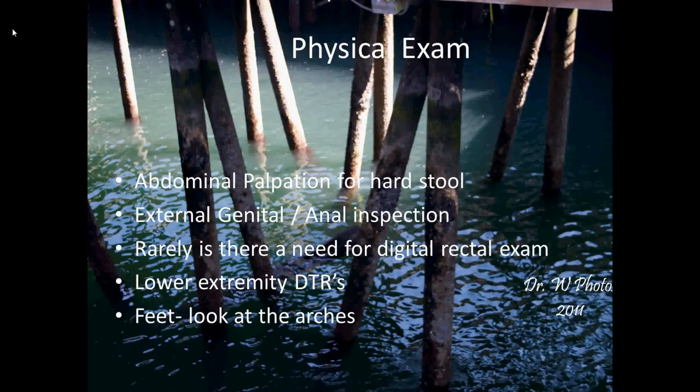Physical exam: it's important to do a thorough exam. Abdominal palpation for hard stool is very important. Look at the external genitalia and the anus — lots of people never take the time to look, and if you never look, you miss all sorts of things. Rarely do you need to do a digital rectal exam, and I would discourage you from doing one unless there's a pressing reason, because these kids already have control issues and taking away that control is just going to make things worse. Look at lower extremity DTRs — this will help you rule out sacrocoxygeal tumors as well as tethered cord. Look at the feet for high arches, which will also help you rule out tethered cord and sacrocoxygeal tumors.